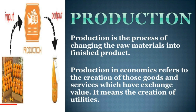What is production? Production is the process of changing raw materials into a finished product. For example, cotton is a raw material; with the help of cotton we produce bed, pillow, cushion, etc. — that is the finished product. Next, production in economics refers to the creation of those goods and services which have exchange value. It means the creation of utilities.